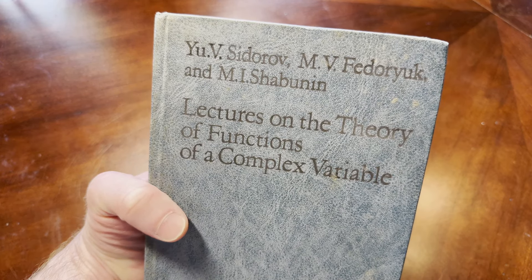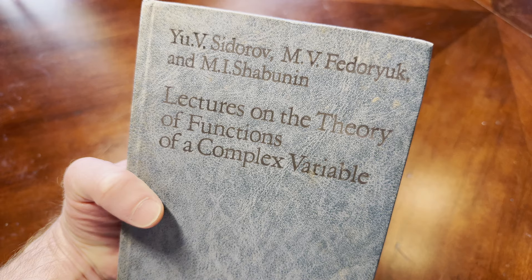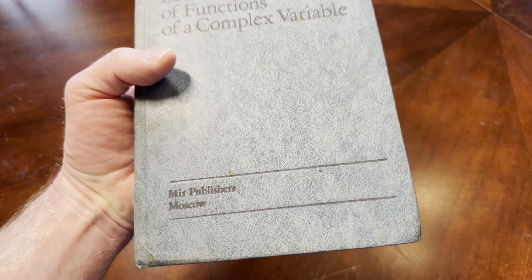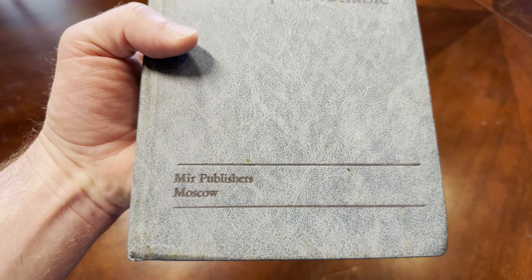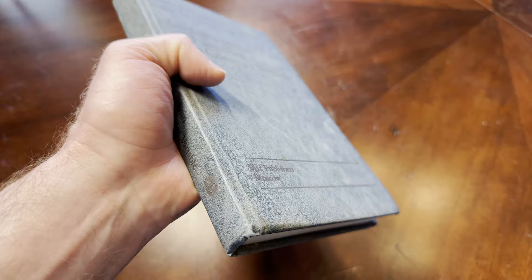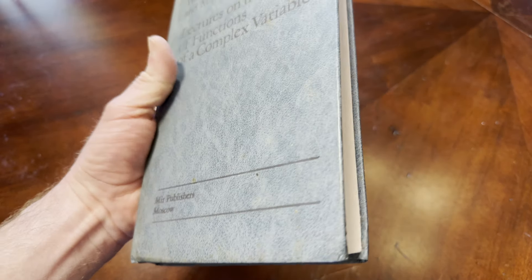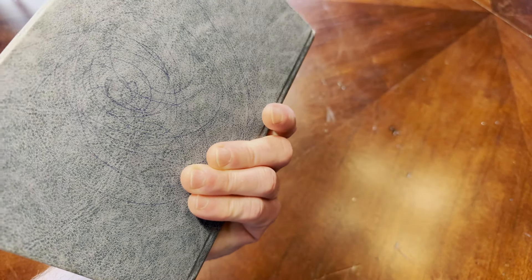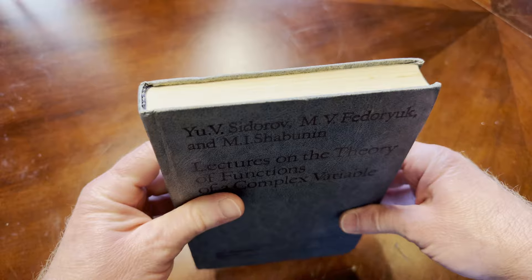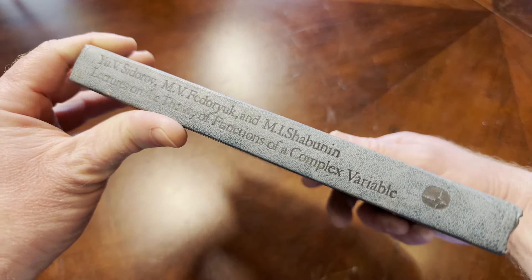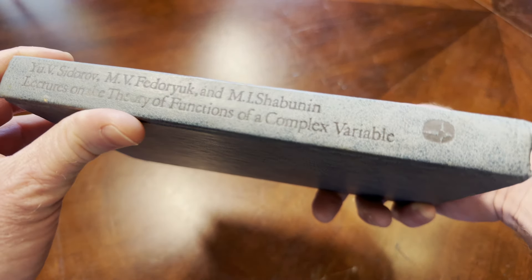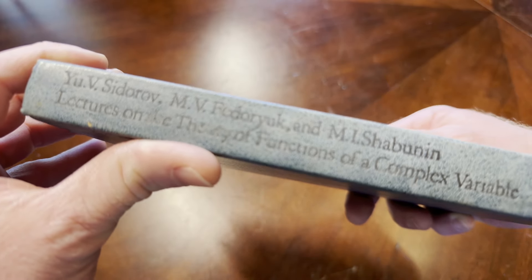It was written by Sidorov, Fedoryuk, and Shabunin. It was published by Mir Publishers Moscow, which was a publishing company during the Soviet Union, and they would take Russian books written by mathematicians and scientists and translate them into other languages.